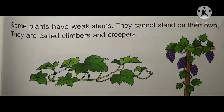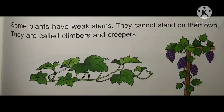Here you can see two examples. Climbers are plants that climb upward, but they need some support to climb. For example, a stick is placed and with its help they climb up — their stems are so weak they cannot stand straight. With support they climb up; they are called climbers. Creepers are plants that spread along the ground. Both climbers and creepers have very weak stems and need support.